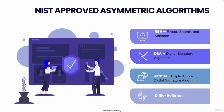We've covered the history of cryptography, symmetric and asymmetric encryption, and approved symmetric algorithms — DES and AES. Now it's time to understand the NIST-approved asymmetric algorithms. NIST — the National Institute of Standards and Technology — develops cybersecurity standards, guidelines, and best practices to meet the needs of US industry, federal agencies, and the broader public. NIST has given us a list of approved algorithms.